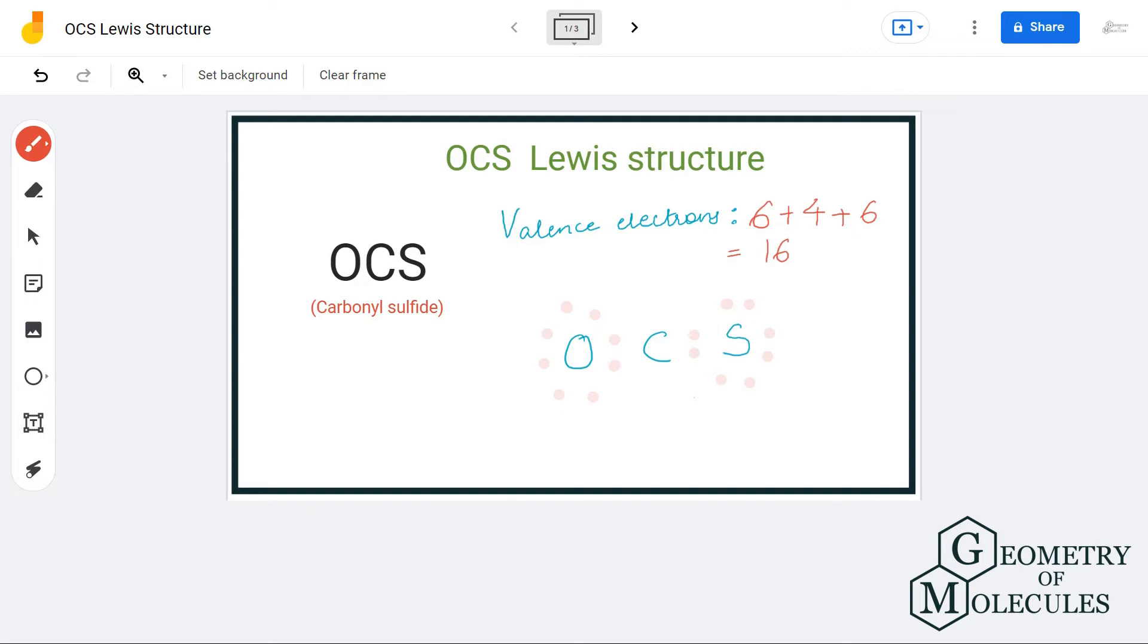Doing that, we will have complete octets for both oxygen and sulfur atom, but this carbon atom has an incomplete octet because it just has four valence electrons in its outer shell. So we will help this carbon atom have a complete octet by shifting a pair of electrons from both oxygen and sulfur atom.